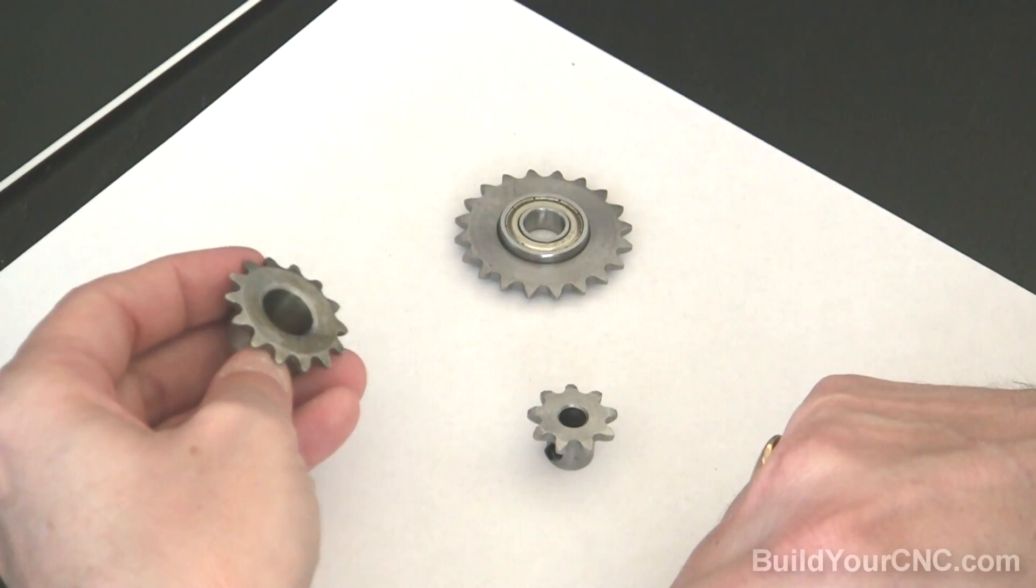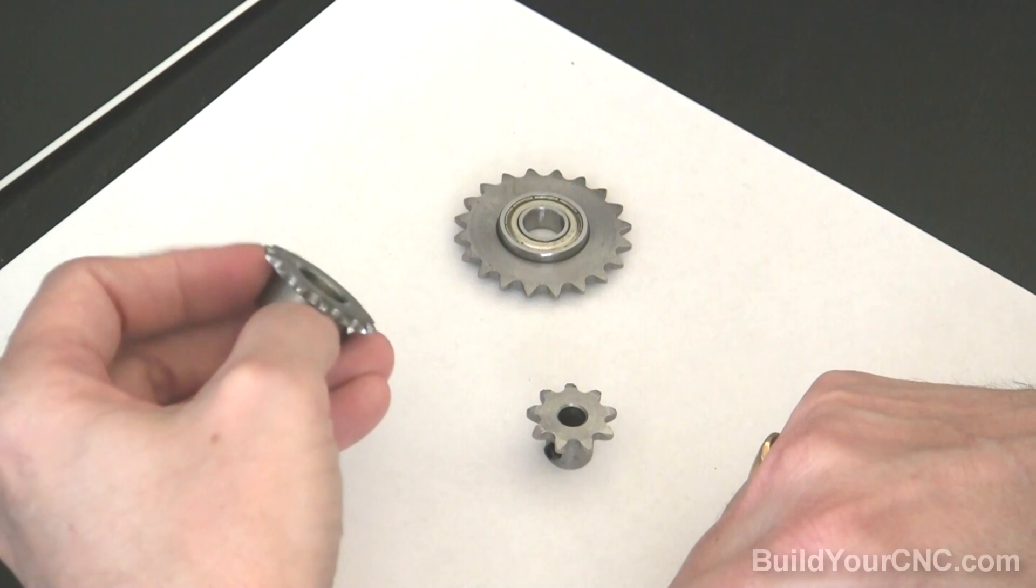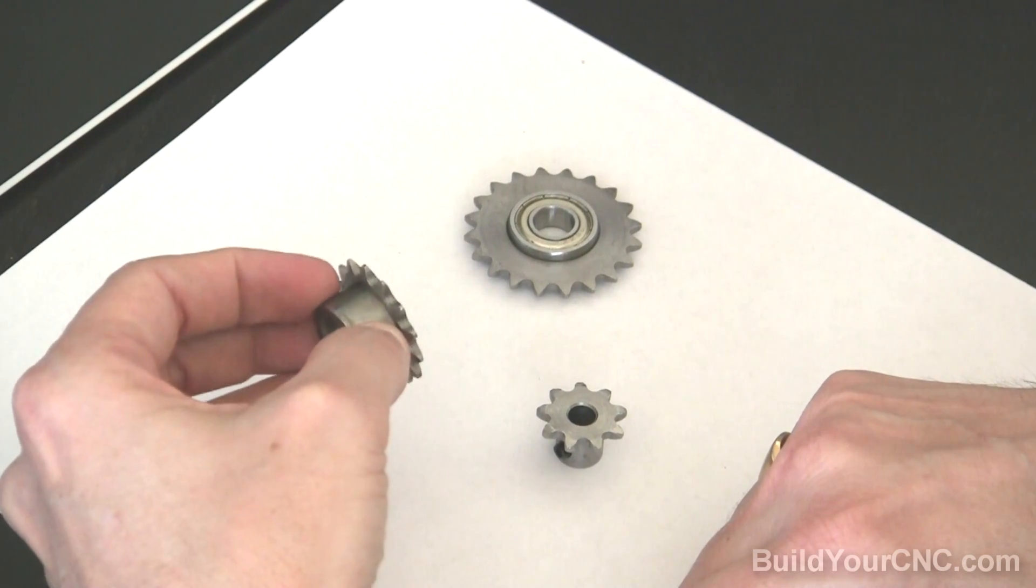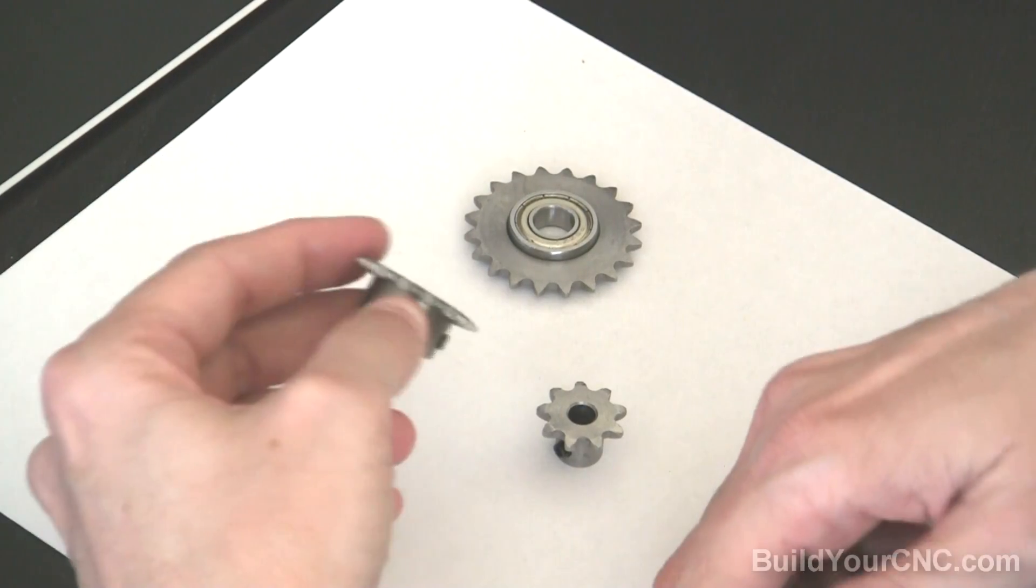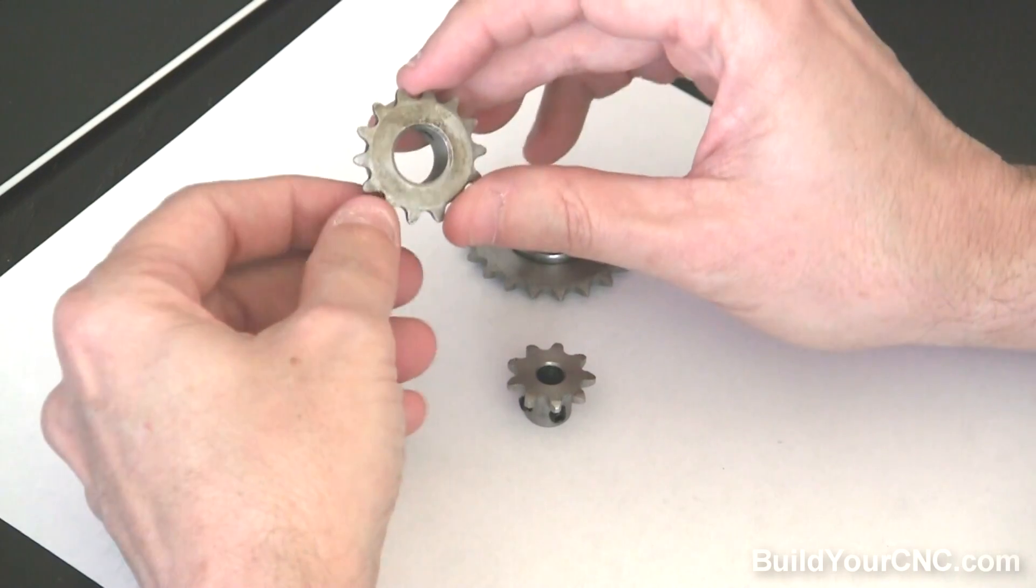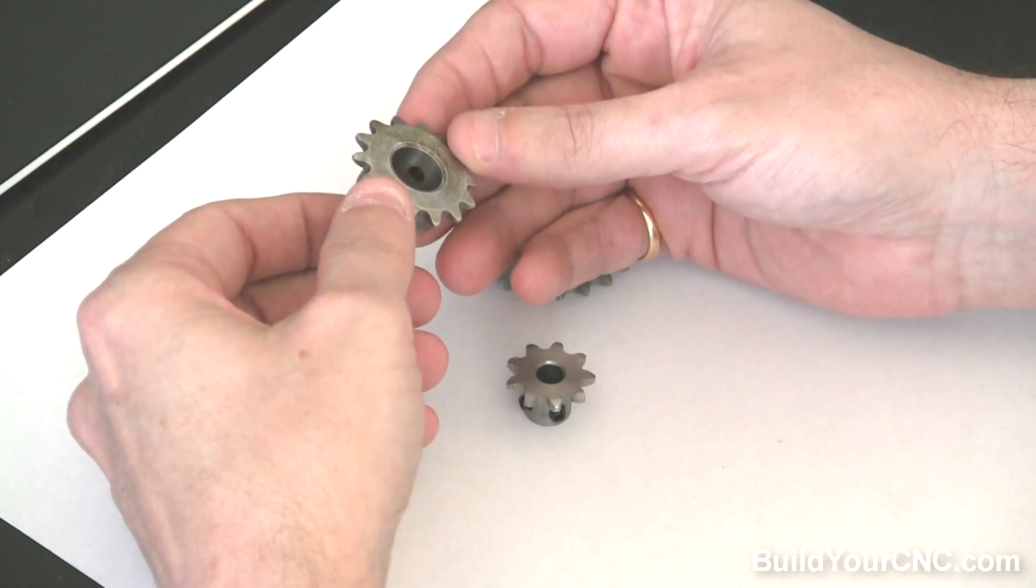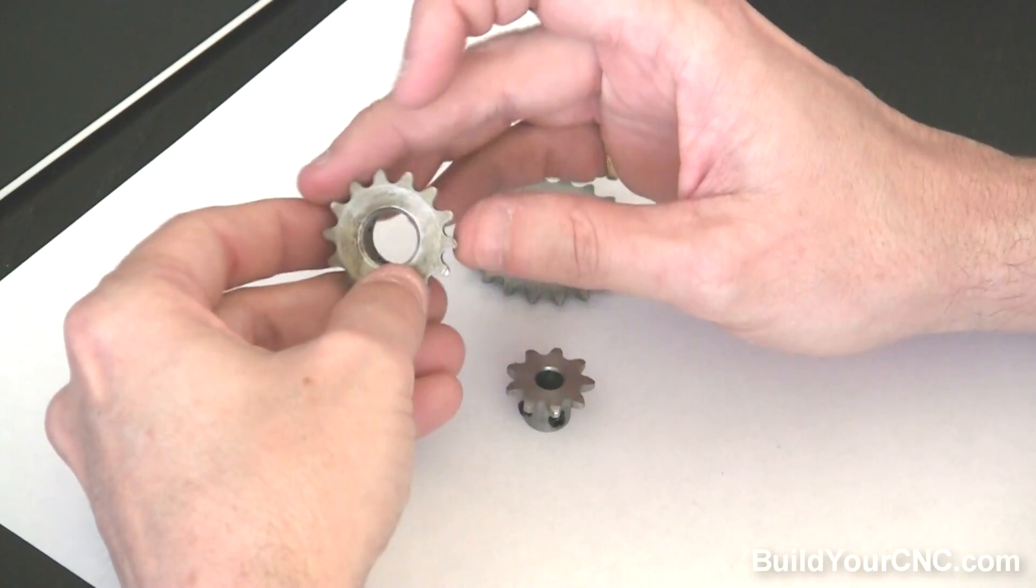The uses for sprockets range from drivetrains and transmissions, to couplings, to mechanical gearing reduction or leverage, and in cases of timing. You've probably seen sprockets used on mechanics of, let's say, bicycles or motorcycles. You've also probably seen them in conveyor systems.